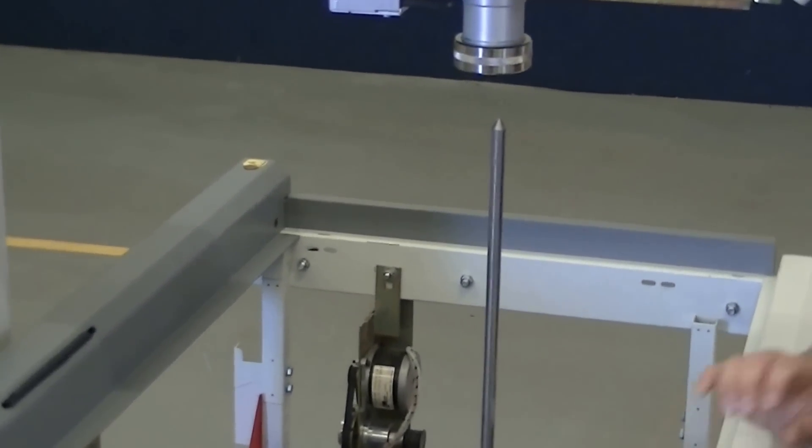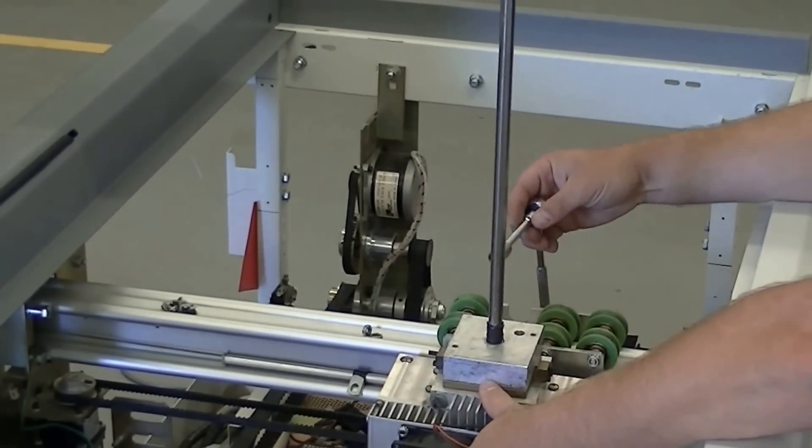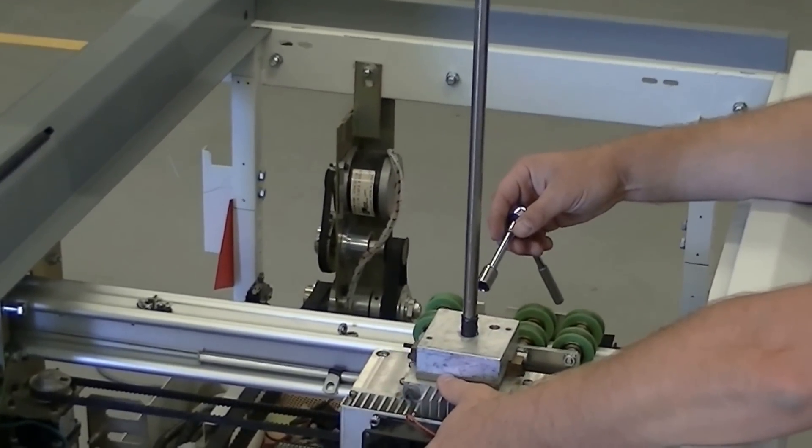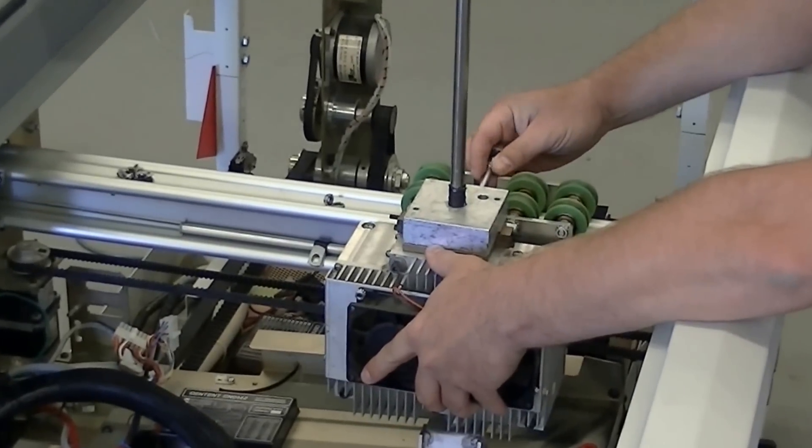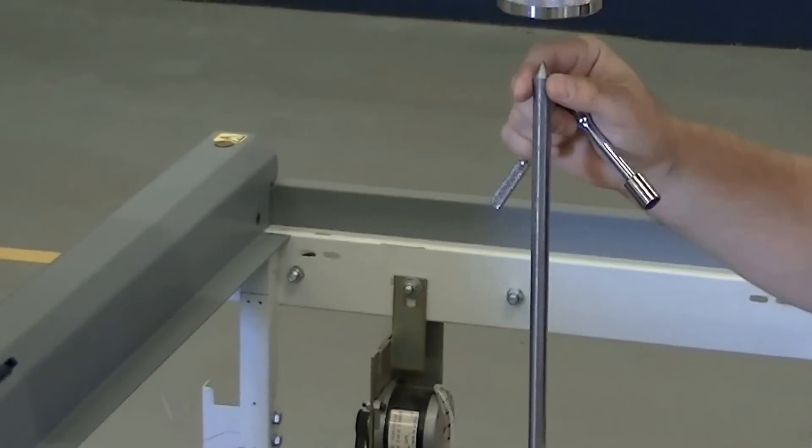So once you have the alignment rod secure, you will then grab with your left hand the tube and there will be a balancing act, trying to get this point of the alignment rod into the bottom of the detector.